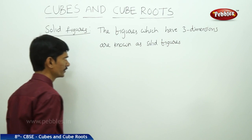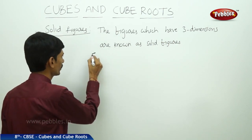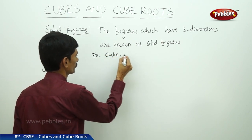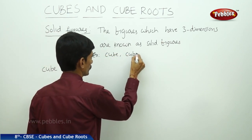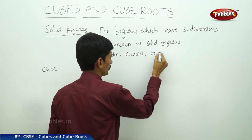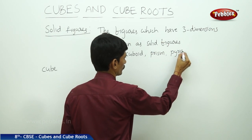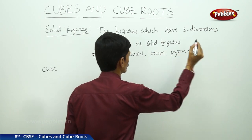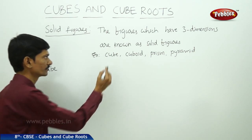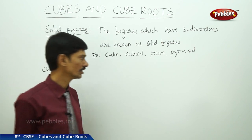Three dimensions means length, breadth, and height. Examples of solid figures are cube, prism, pyramid, and so on. These are all solid figures because they have three dimensions: length, breadth, and height.